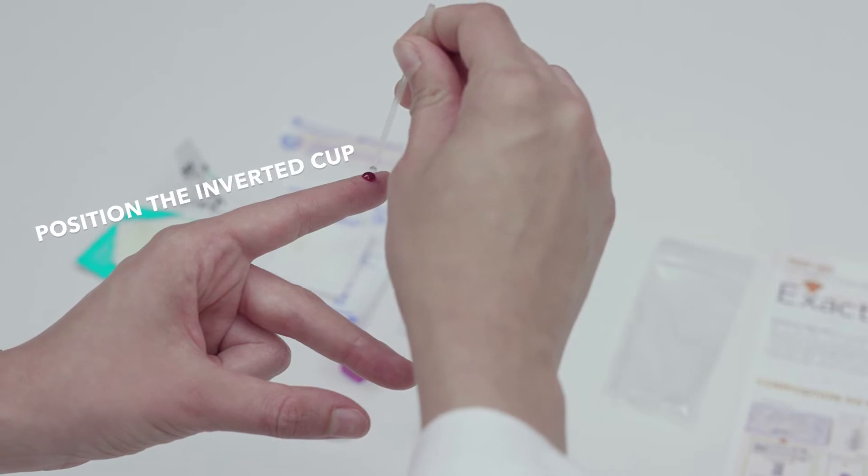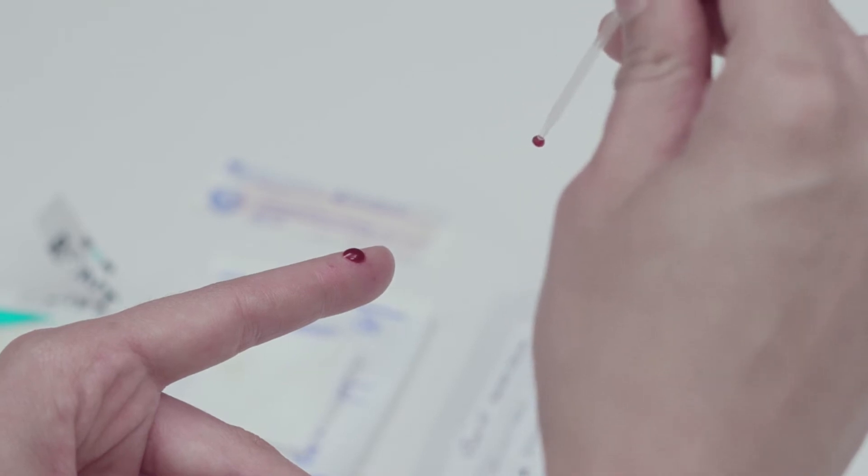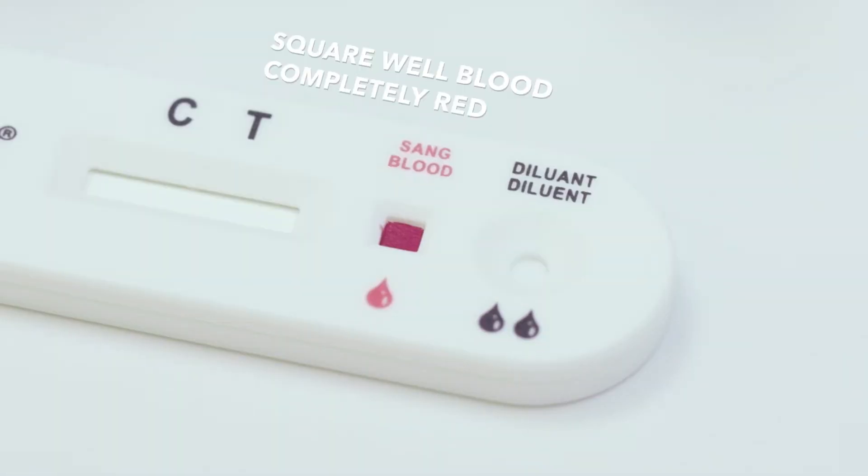Position the inverted cup vertically with the wide end on the drop of blood to fill it completely. Place the drop of blood into the square well. Make sure the bottom of the square is covered completely in red.